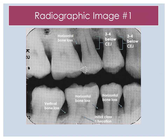Here we have a radiographic image. We can see horizontal bone loss along with some vertical bone loss on the mandible. We also have horizontal bone loss on the maxilla in the posterior region. On the mandible, we do see the initial class 1 furcation. And on the maxilla, on those premolars, areas of 3 to 4 millimeters below the CEJ.